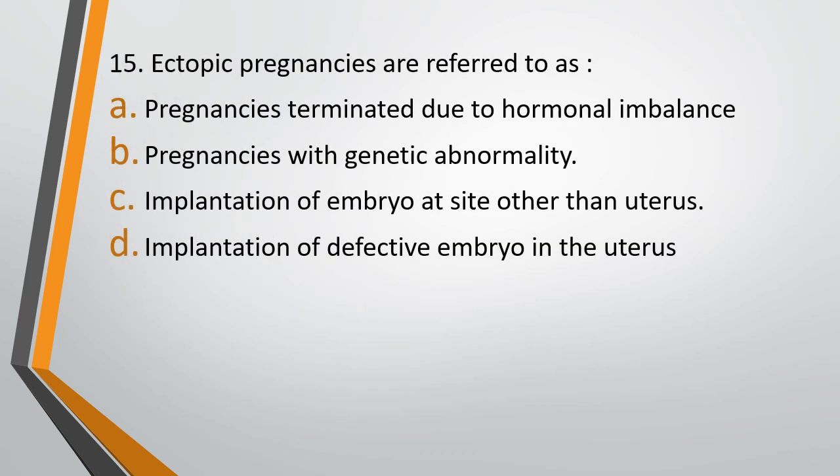Question 15. Ectopic pregnancies are referred to as — Option A: Pregnancies terminated due to hormonal imbalance. Option B: Pregnancies with genetic abnormality. Option C: Implantation of embryo at a site other than uterus. Option D: Implantation of defective embryo in the uterus. The correct answer is Option C — implantation of embryo at a site other than uterus.